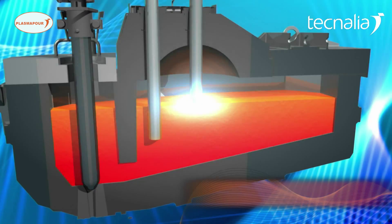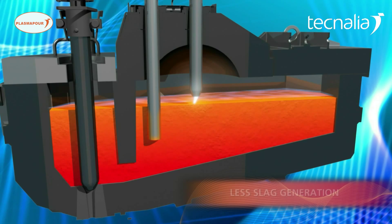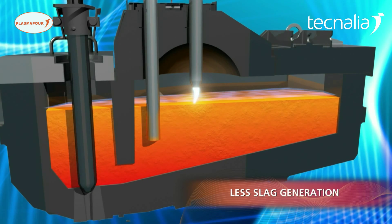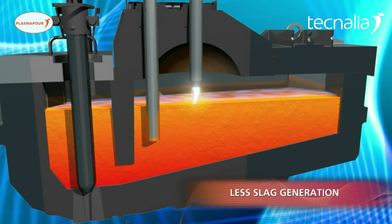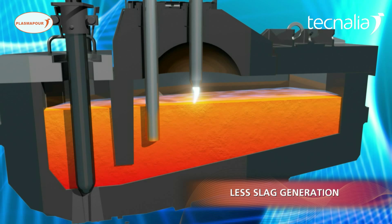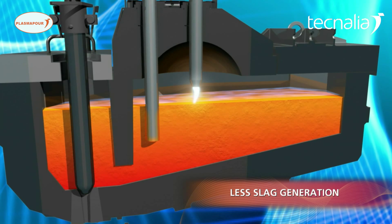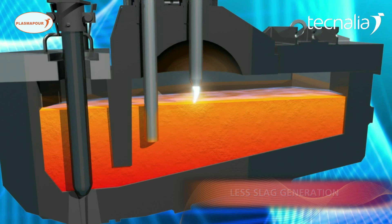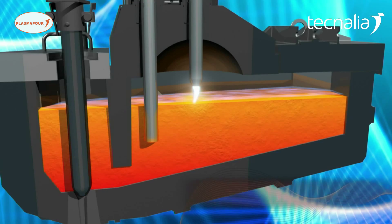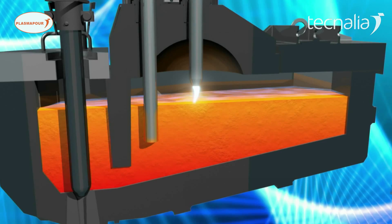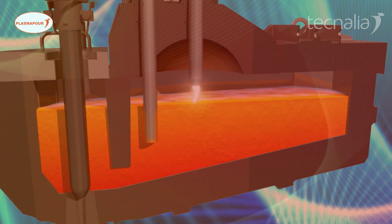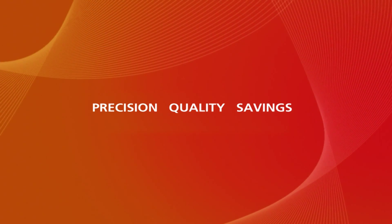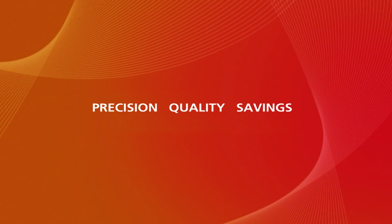Finally, less slag is generated. The presence of an inert gas on the surface of the bath and the continuous supply of carbon from the submerged anode limit the formation of slag in the plasma chamber. Precision. Quality. Savings.